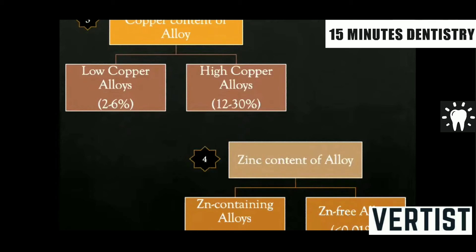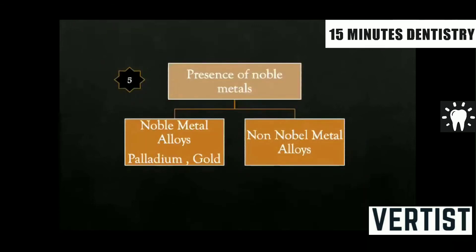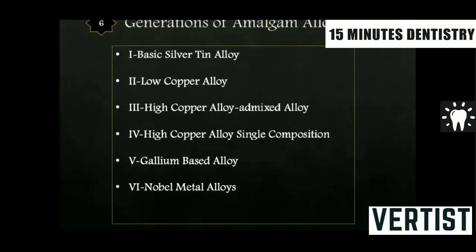The third classification is based on copper content — we have low copper alloys (around 2–6% copper) and high copper alloys. Fourth is the zinc content: zinc-containing alloys versus zinc-free alloys, when the percentage is less than 1%. Fifth is the presence of noble metals such as palladium or gold. The sixth classification is by generation — based on the development of the amalgam alloy, from basic silver-tin alloy to modern alloys with noble metals.